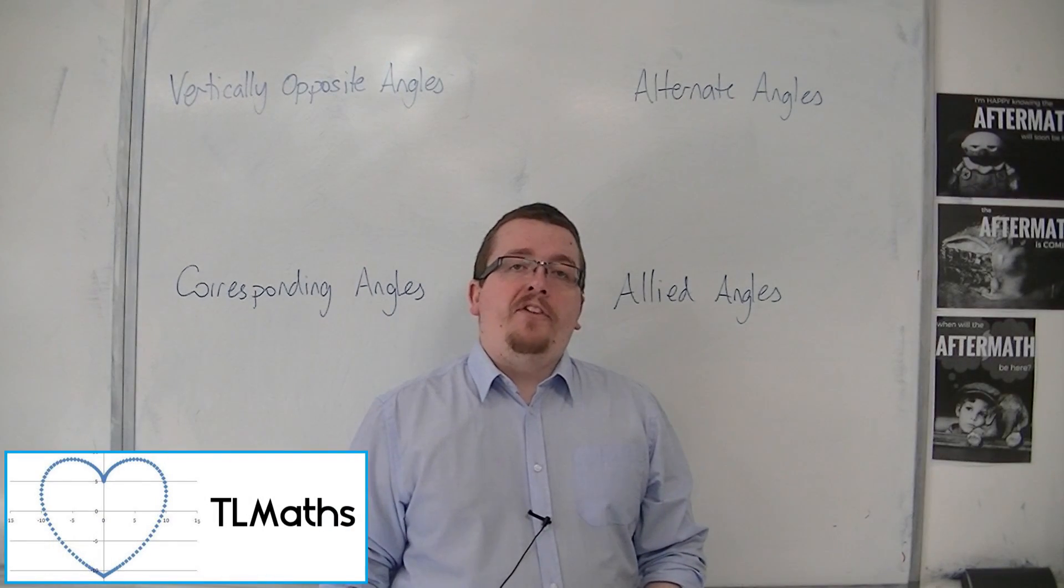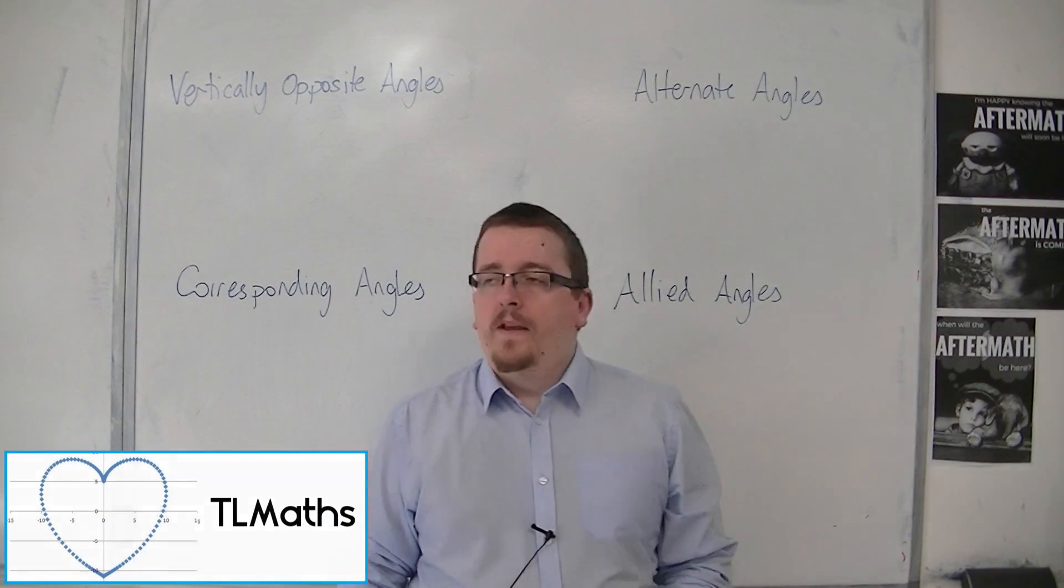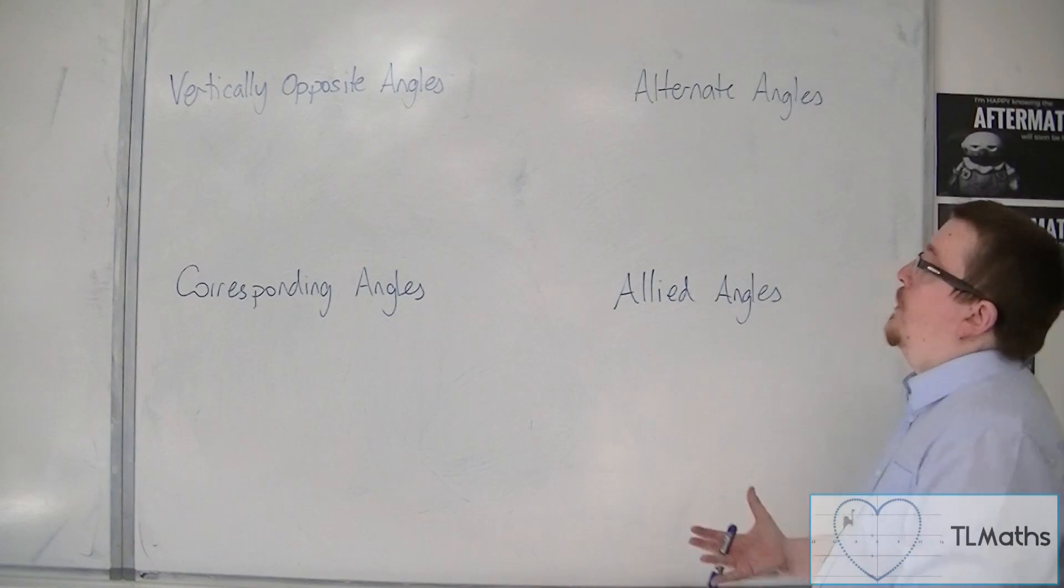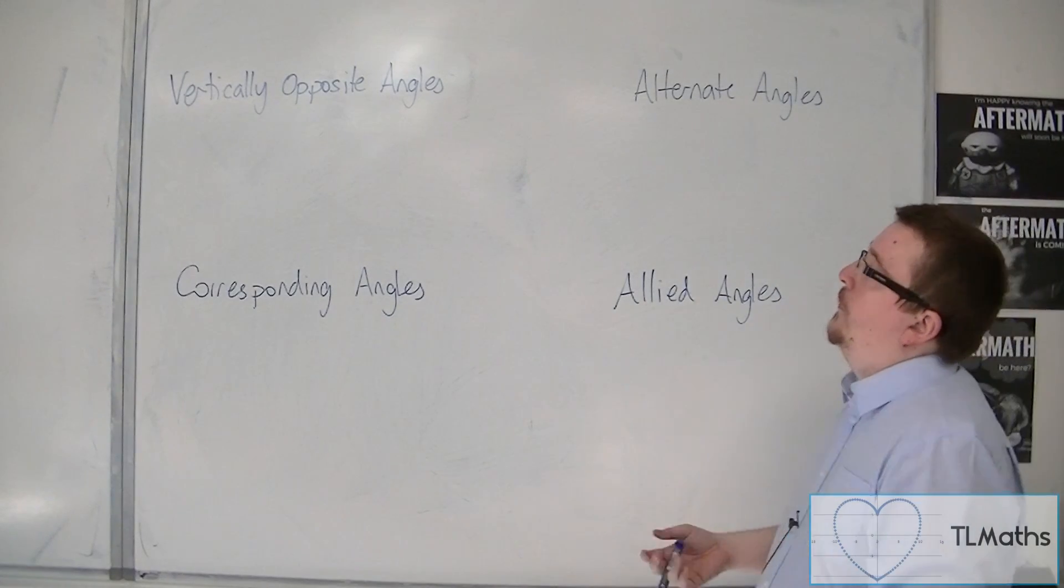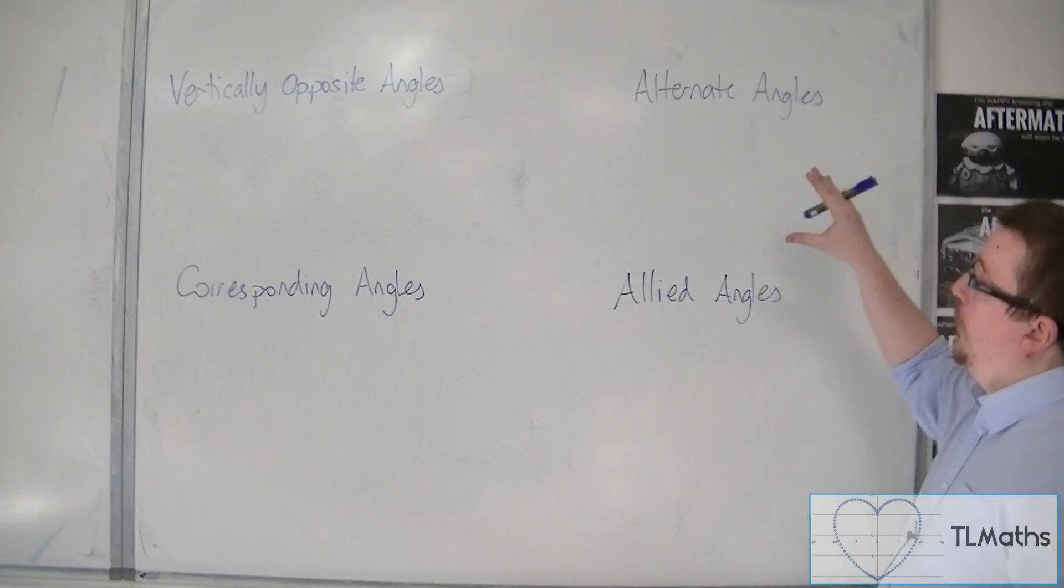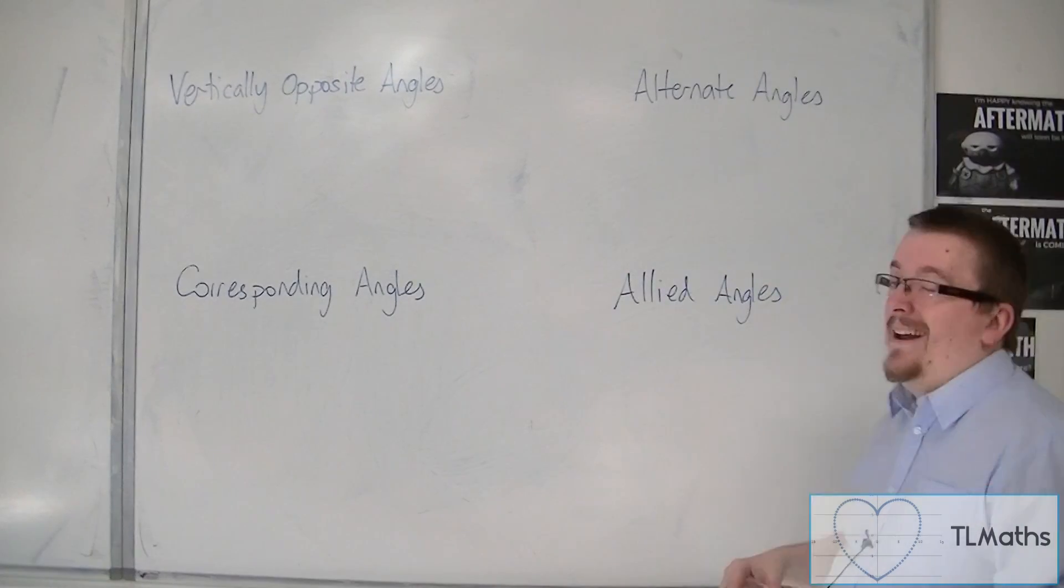So we're going to look at some more GCSE recap in this session, and we're going to look at four different types of angles: vertically opposite, alternate, corresponding, and allied angles.